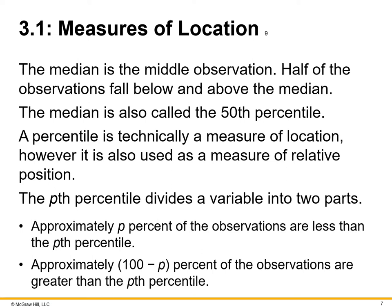The median is the middle observation — half the observations fall below or above it — and is also called the 50th percentile. A percentile is a measure of location and also of relative position. The pth percentile divides a variable into two parts: approximately p percent of observations are less than the pth percentile, and approximately 100 minus p percent are greater. This above-and-below approach helps identify what numbers fall above or below the 50th percentile.